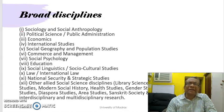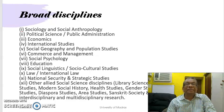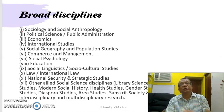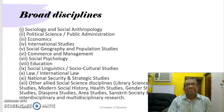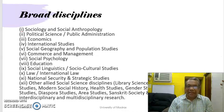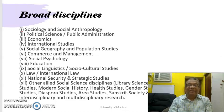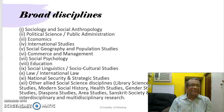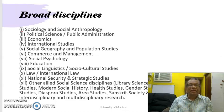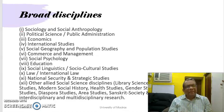The broad disciplines under which you can get funding include Sociology and Social Anthropology, Political Science, Public Administration, Economics, International Studies, Social Geography and Population Studies, Social Psychology, Commerce and Management, Education, Social Linguistics, Socio-Cultural Studies, Law, International Law, National Security and Strategic Studies, and other social sciences disciplines such as Library Science, Social Work, Media Studies, Health Studies, Gender Studies, Social History, Environmental Studies, and Diaspora Studies. You name any important discipline and you will find it here.